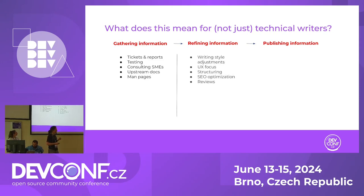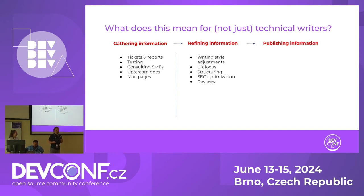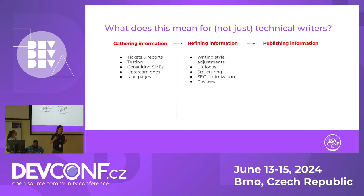Then, after we have the background information we need, we refine it in a way that makes it as helpful and impactful as possible. Generally, we write in a way that makes the content easy to find, easy to read, and effective when put into action. We also have a lot of reviews done by various stakeholders, subject matter experts, other writers, and generally try to get it as fine-tuned as possible.